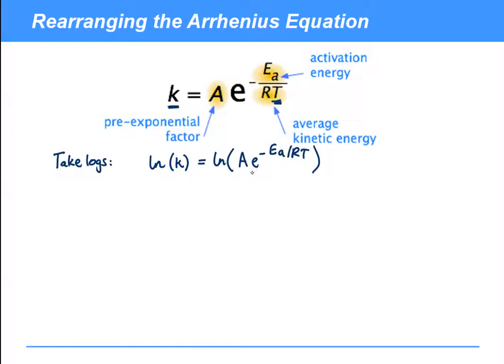Now, this is just a product of two terms which you can express as the sum of its logarithms. And because we've got the logarithm of E to a power, then we can rewrite that as ln A minus E_A over RT times ln of E. And because we've used a natural logarithm, then natural logarithm of E is just going to be one.